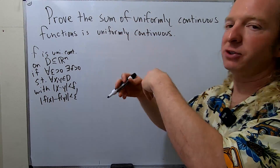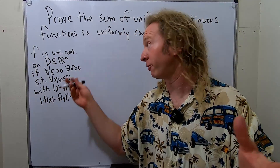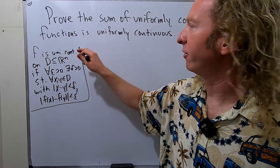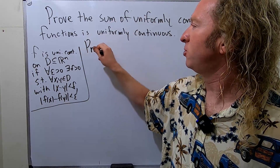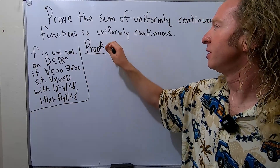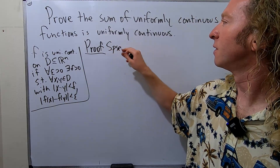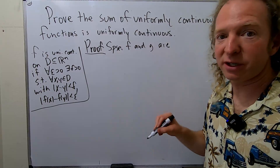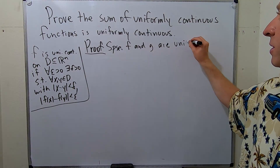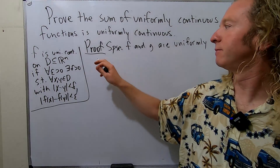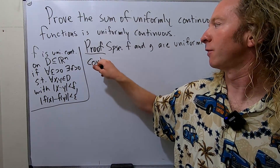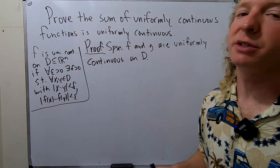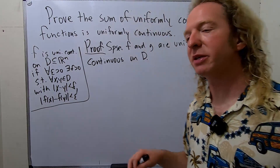Everything is the same — the proof is the same even if you do it just for real-valued functions defined on the real line. So let's go ahead and go through the proof very carefully. We'll start by assuming we have two uniformly continuous functions on D: suppose F and G are uniformly continuous on D.